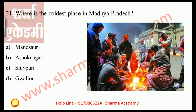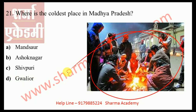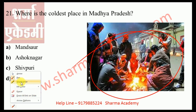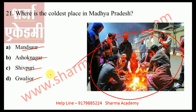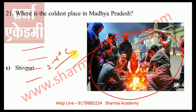Where is the coldest place in Madhya Pradesh? Options: Mansour, Ashok Nagar, Shivpuri. The correct answer is Shivpuri. Shivpuri is the coldest place in Madhya Pradesh, where the minimum temperature is found between 2 to 4 degrees Celsius in January — and sometimes even less. Due to excess of highlands in the northern part, the plateau region gets the coldest. Shivpuri has an average elevation of 468 meters and is a popular tourist attraction in the monsoon season due to its waterfalls and lakes.